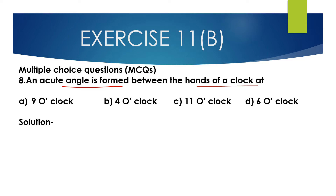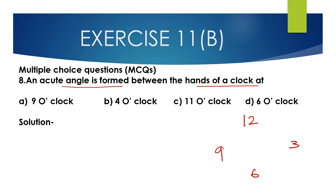Let's analyze 9 o'clock. Draw the clock: 12 at top, 3 on the right, 9 on the left, and 6 at the bottom. At 9 o'clock, the hands point to 12 and 9.